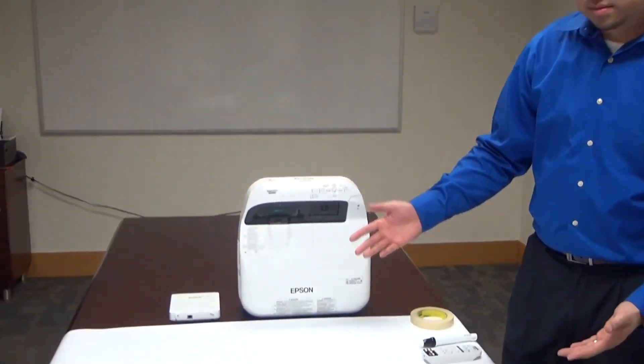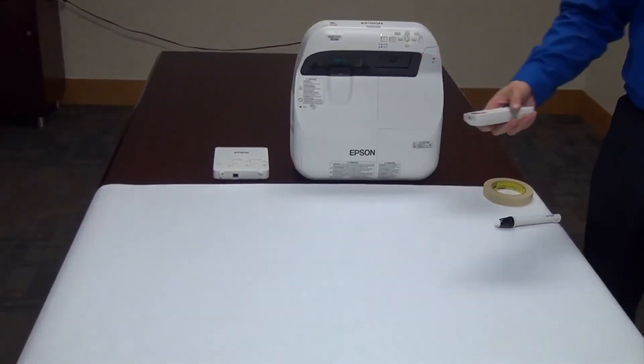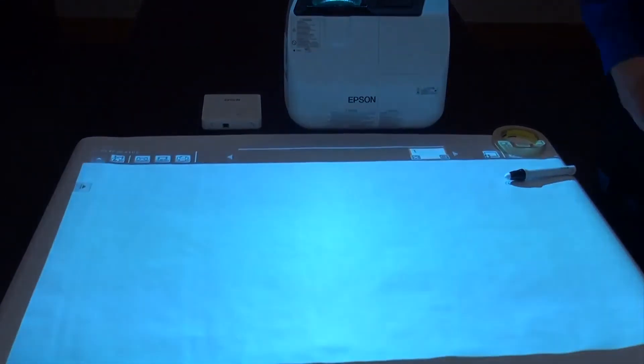Here I have the second easy demo option. Stand the projector up on end. Project directly onto a table. If you don't have a white table, bring some white paper. Roll it out. Tape it down. Turn on your projector. You're good to go.